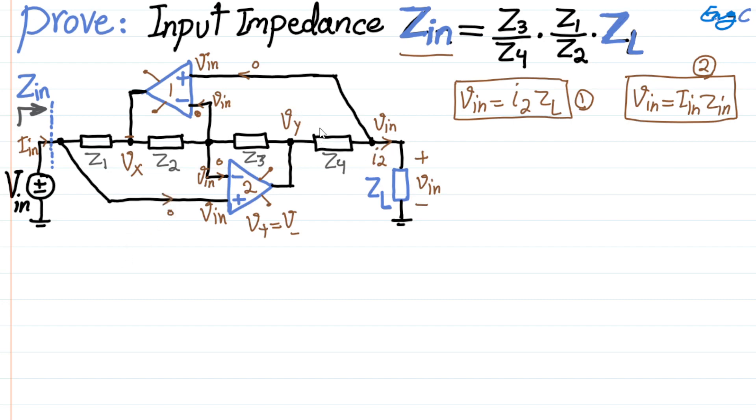So therefore, I2 goes this way, I2 goes through Z4 as well, that we know. Now, whatever Ix is going this way through Z3, that Ix cannot go through negative input terminals of these op-amps, so it has to flow through Z2 as well, so that is also Ix.